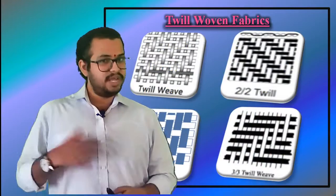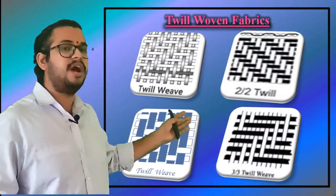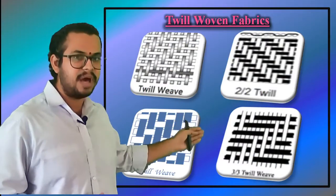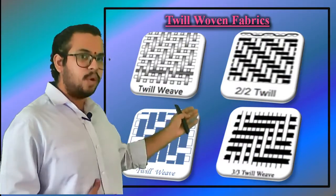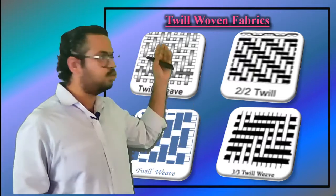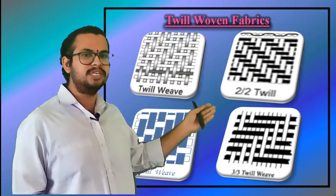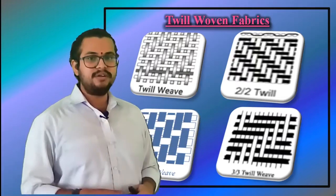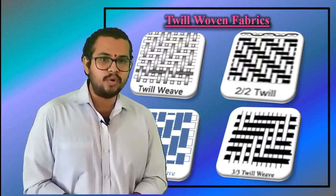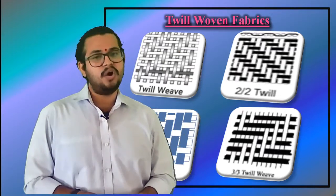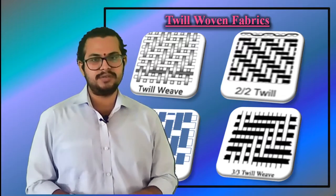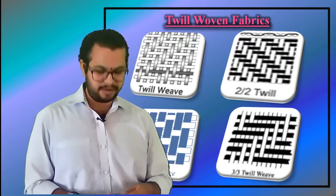Twill woven fabrics. In this type of weaving, one or more warp fibers alternately weave over and under two or more weft fibers in a regular, repeated manner, producing a straight or broken diagonal rib on the fabric.